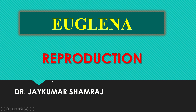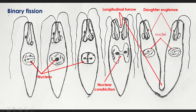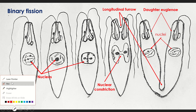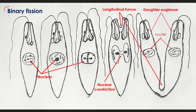In the case of Euglena, asexual reproduction takes place. Euglena can multiply asexually by two processes: one is called binary fission, by which a single Euglena divides into two Euglenas. The second process is called multiple fission, in which from a single Euglena, many Euglenas are formed.